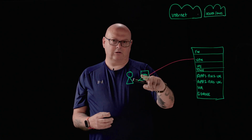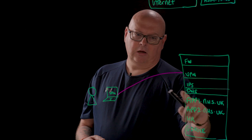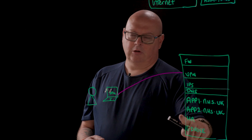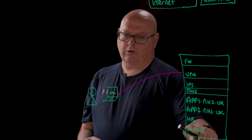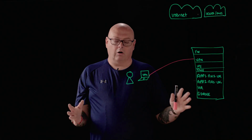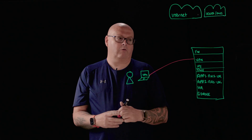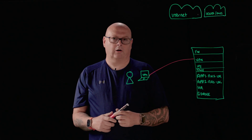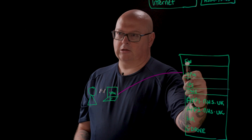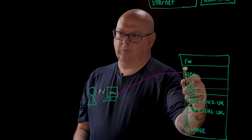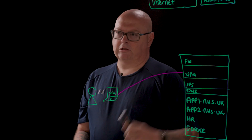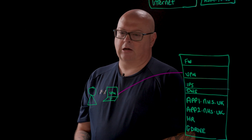So if this device is compromised, a hacker can go and take out app one, app two, the HR app, the G drive — it can all just disappear really, really quickly. This VPN has a publicly exposed IP address. If you can see it, you can attack it.